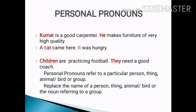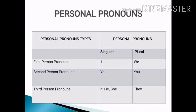Now let's look in detail about personal pronouns. There are two ways of categorizing personal pronouns. We can categorize them as first person pronouns, second person pronouns, and third person pronouns. For first person pronouns: singular is 'I' and plural is 'we'. Imagine you and your friend are talking — when you speak about yourself, you are the first person, so you use 'I'. When you speak about you and your friend together, you use the plural form 'we'.